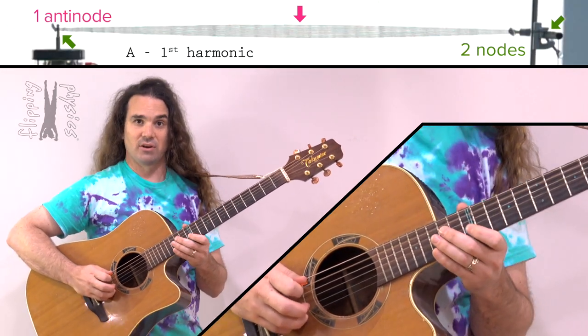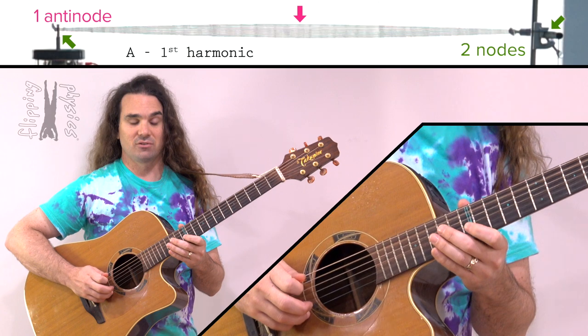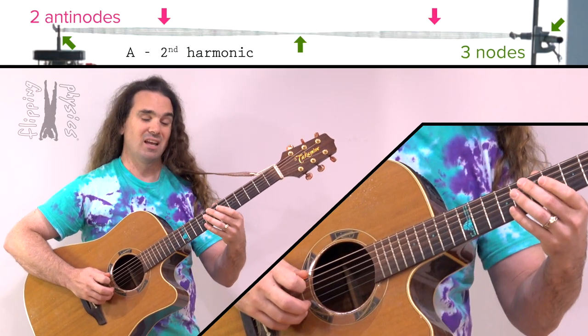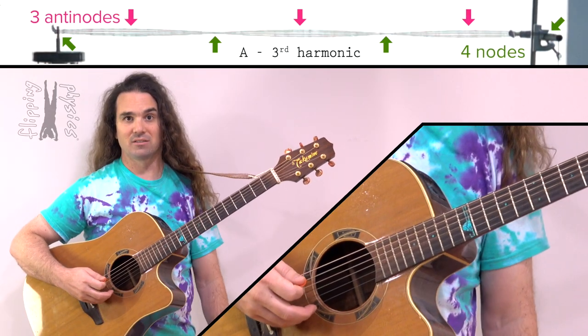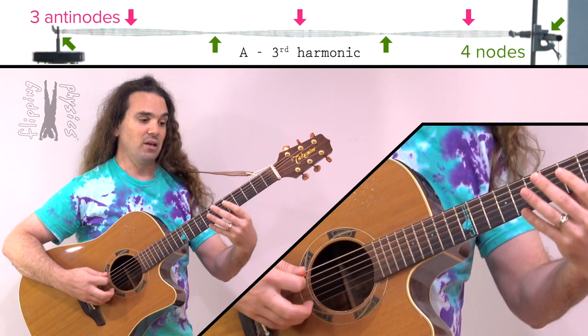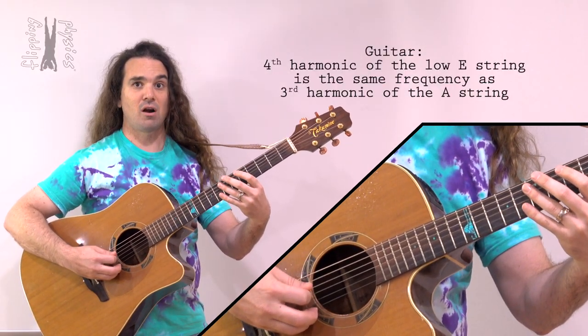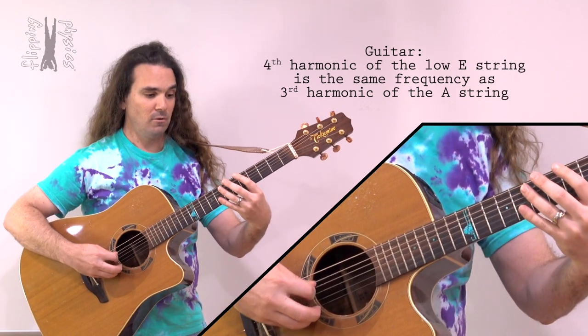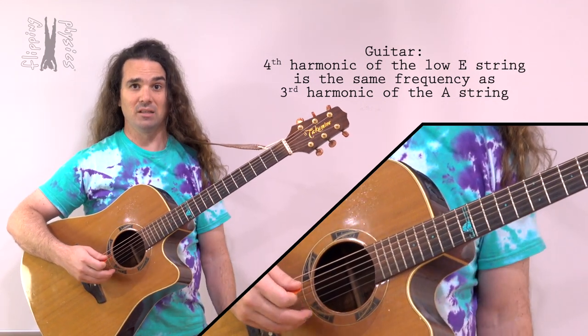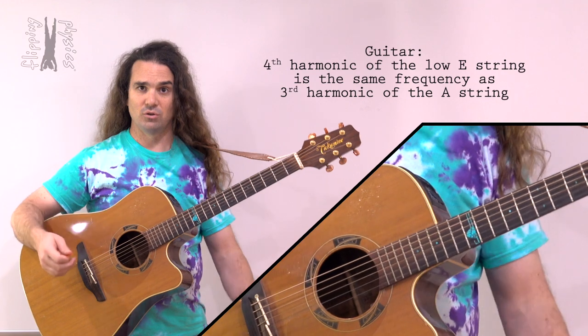And this is the A string. So this is the first harmonic on the A string, this is the second harmonic on the A string, and the third harmonic on the A string. Therefore, when you play the fourth harmonic on the low E string and the third harmonic on the A string, you should not hear any beats because the two are in tune with one another.